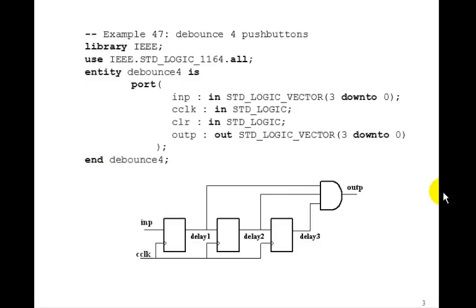We're going to write a program called debounce4 that will debounce all four switches on your FPGA board. So the input's going to be an input 3 down to 0. You'll connect this typically to button 3, button 2, button 1, button 0. C-Clock is this relatively low frequency clock we'll bring in. Clear is our usual clear, and then the output will have four outputs. So we're going to make four versions of this circuit. Output will be out standard logic vector 3 down to 0.